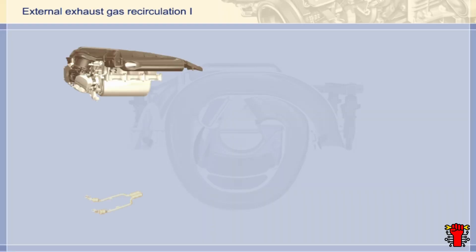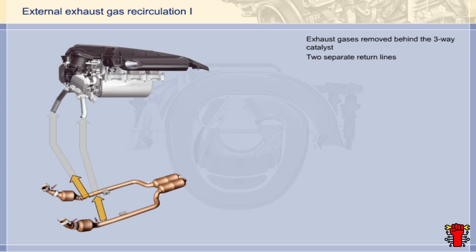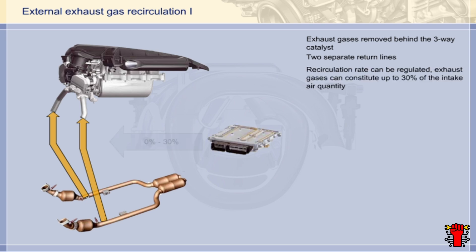External exhaust gas recirculation is activated in stratified charge mode, and for this the DE engine requires some special components. The exhaust gas is removed from behind the two three-way catalysts and conveyed towards the intake pipe in two separate lines. The recirculation rate can be steplessly regulated, and up to 30% of the intake air quantity can be made up of exhaust gas. The ME control unit regulates the recirculation rate in accordance with a map and as a function of engine load.